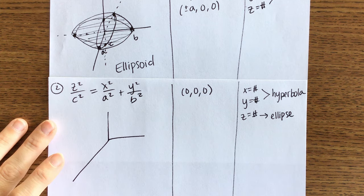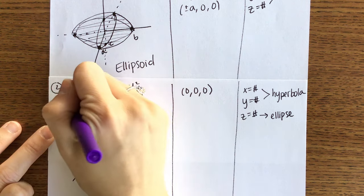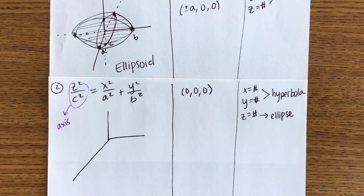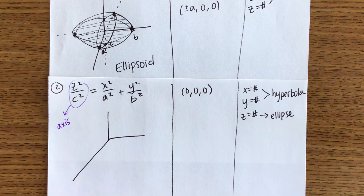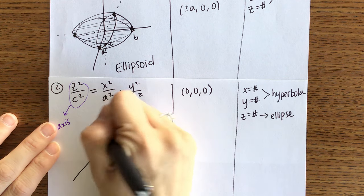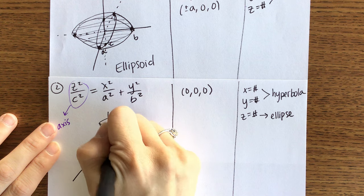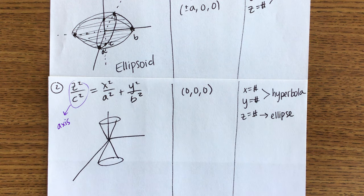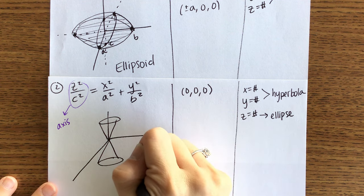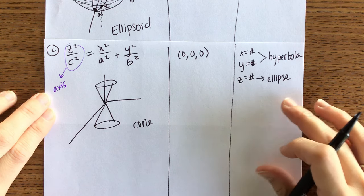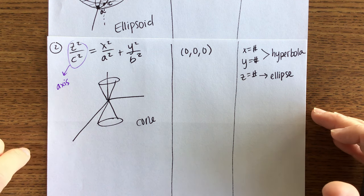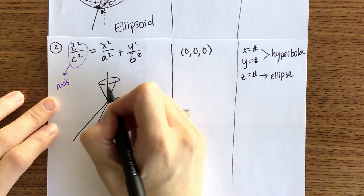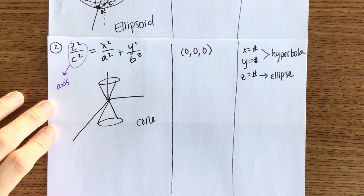Whatever variable is by itself is the axis we will be using. This figure is going to form two different cones — one cone that opens up, one cone that opens down. This one, shockingly, is going to be called a cone — sometimes called an elliptic cone. Elliptic cone means that the cross-sections are ellipses rather than circles.